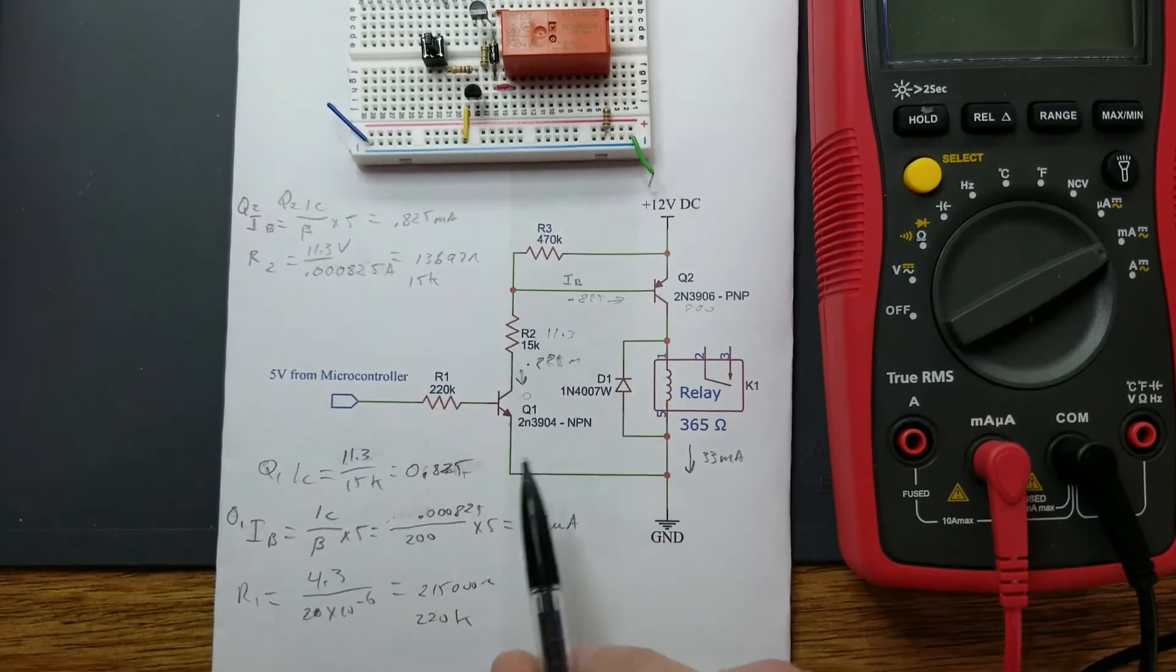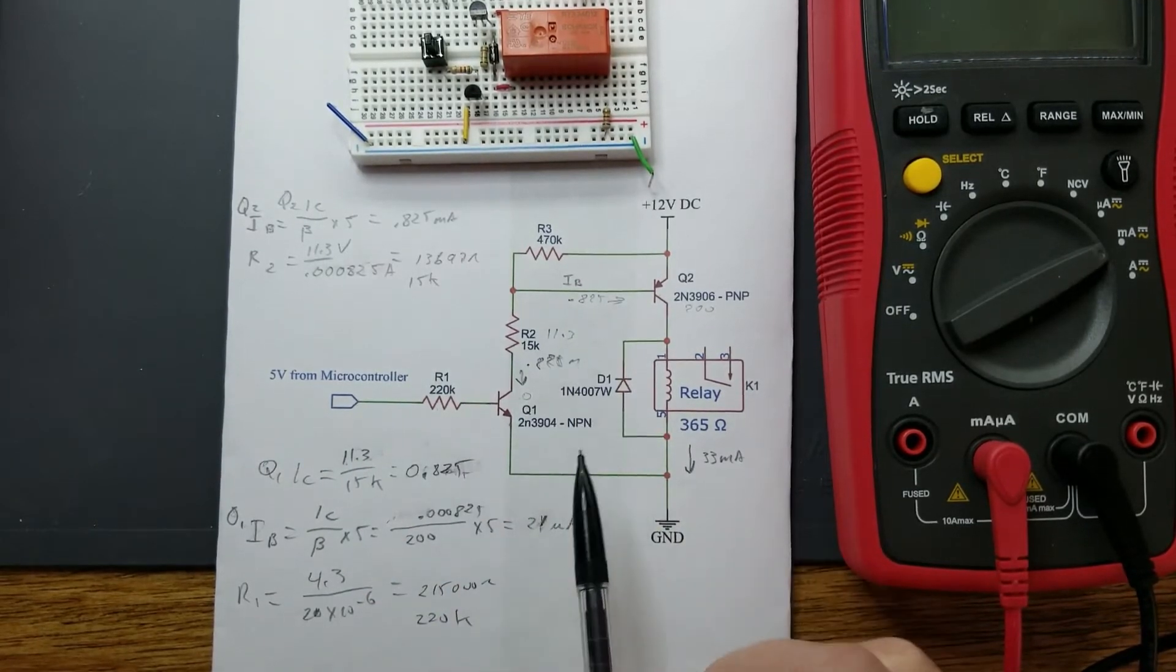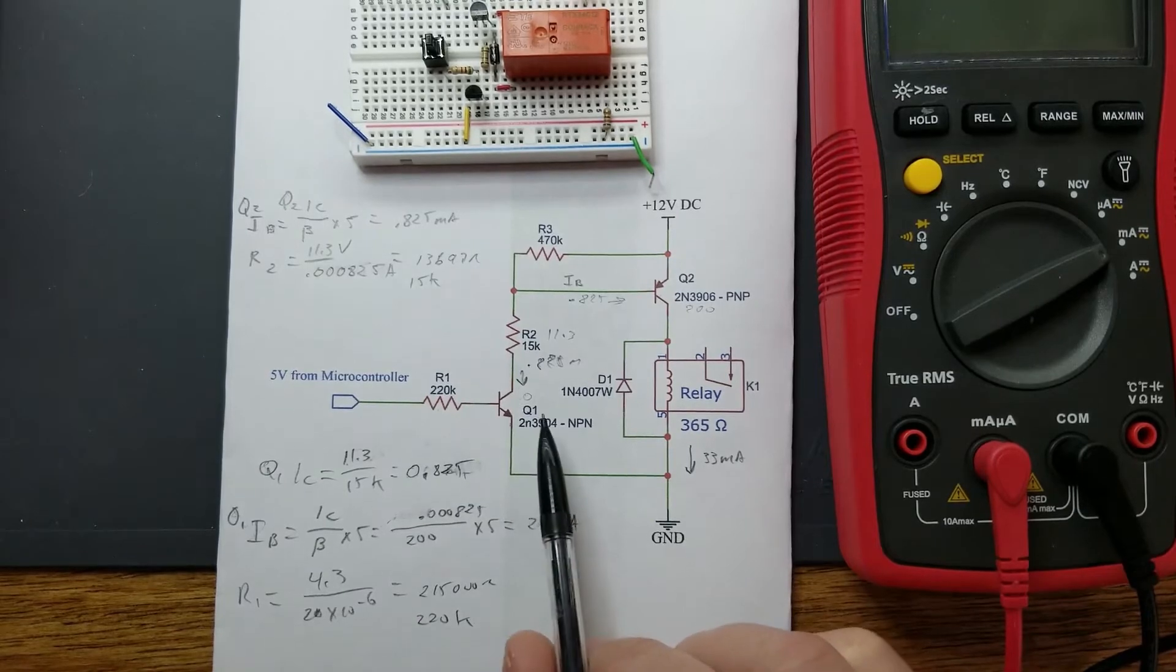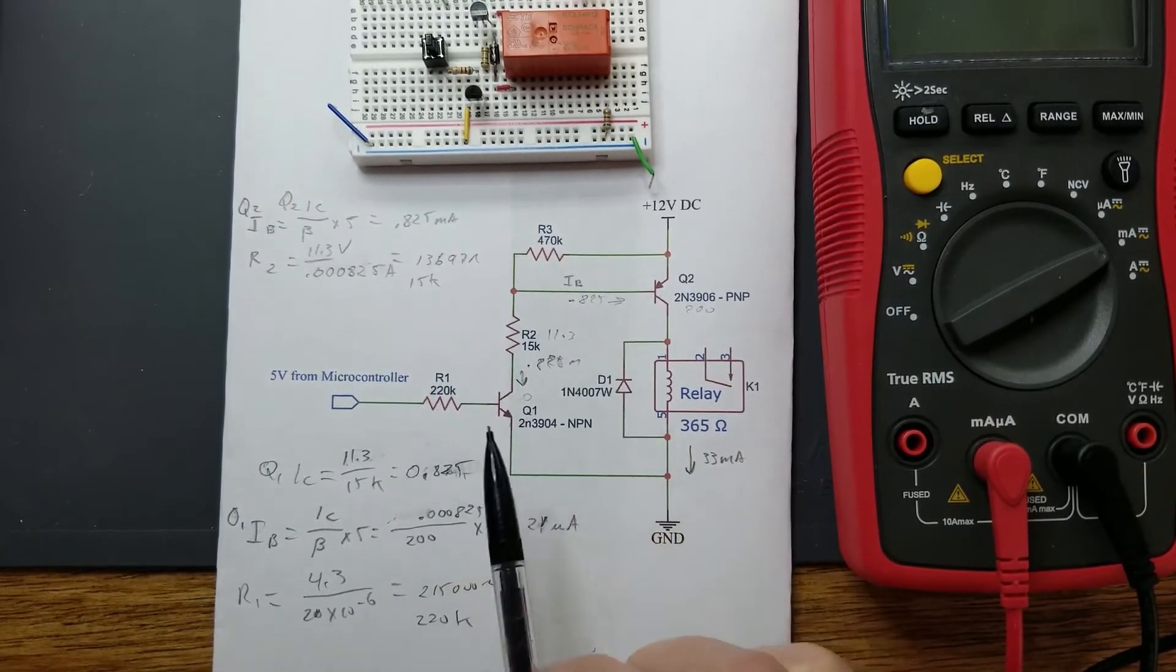220k resistor, so that's a standard value. We use that right there. That is the calculations for this particular circuit. I'll go ahead and demonstrate that and measure these voltages and these currents.